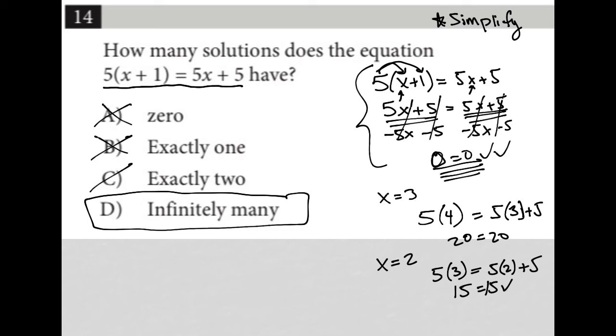And you get where I'm going with this because I could just go ahead and try x=4. And that would give me 5 times 5 equals 5 times 4 plus 5. And in both cases, I'd have 25, which confirms that it's not exactly two either.